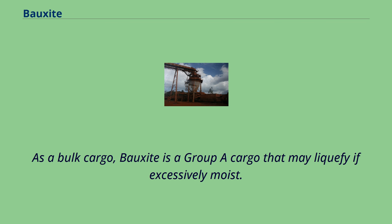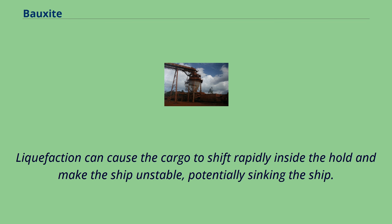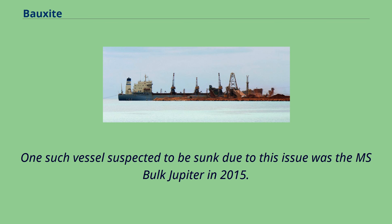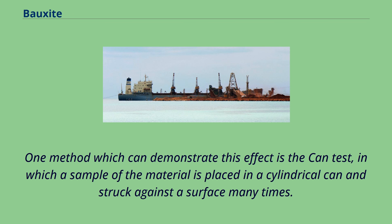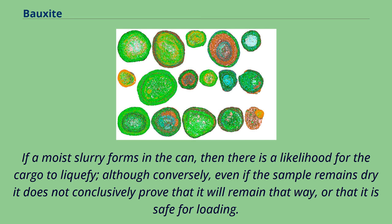As a bulk cargo, bauxite is a Group A cargo that may liquefy if excessively moist. Liquefaction can cause the cargo to shift rapidly inside the hold and make the ship unstable, potentially sinking the ship. One such vessel suspected to have sunk due to this issue was the MS Bulk Jupiter in 2015. One method which can demonstrate this effect is the can-test, in which a sample of the material is placed in a cylindrical can and struck against a surface many times. If a moist slurry forms in the can, then there is a likelihood for the cargo to liquefy, although even if the sample remains dry it does not conclusively prove that it will remain that way or that it is safe for loading.